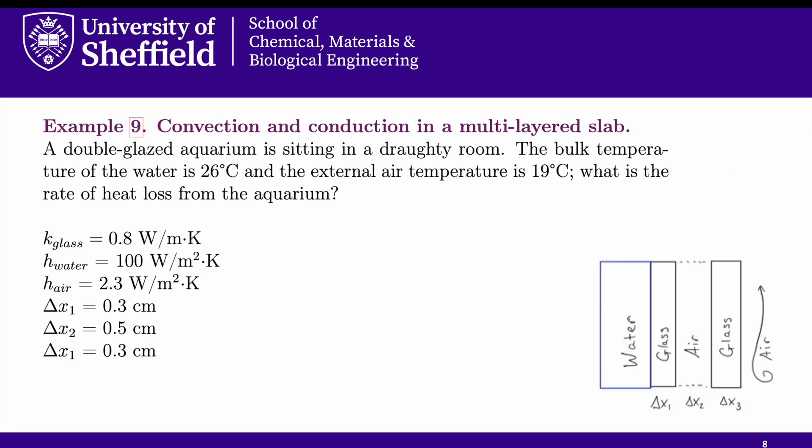Alright, let's solve a problem using this. We're looking at an aquarium that has double glazed walls. The water is isothermal at a known temperature, and the ambient air outside the glass is isothermal at a known temperature. We're given a couple of heat coefficients and the thicknesses of each layer.